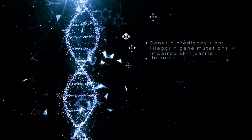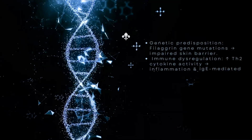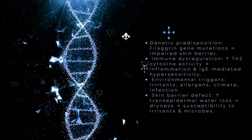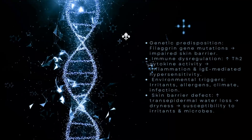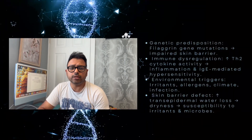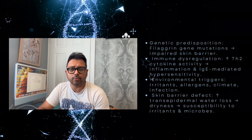Now let's understand the pathophysiology. First, we need to consider genetic predisposition, like filaggrin gene mutation, which leads to impairment of the skin barrier. Next, we need to consider the immunological problem, like Th2 cytokine increment, which leads to inflammatory output as well as IgE mediation.